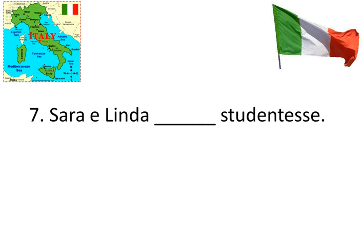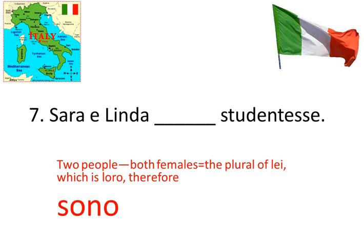Numero 7: Sara e Linda blank studentesse. Sara and Linda are students. I need to have the loro form here, because it's two people — both females. One female would be lei, but two or more would be loro. Therefore I'm picking the loro form of the verb essere, which as you can see is sono.